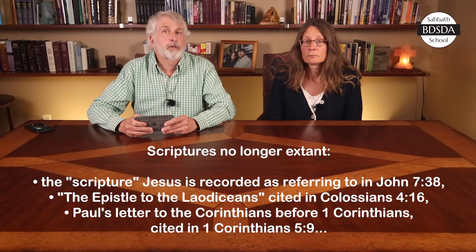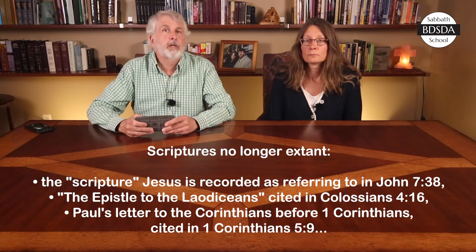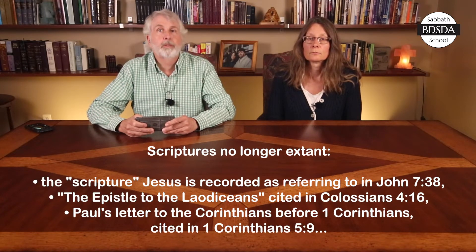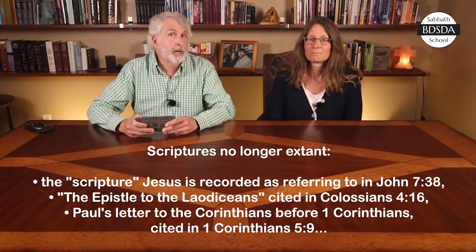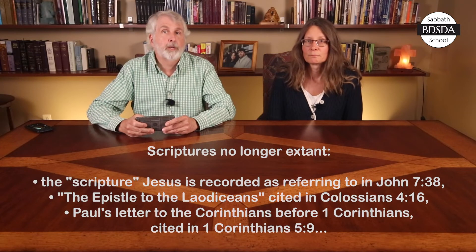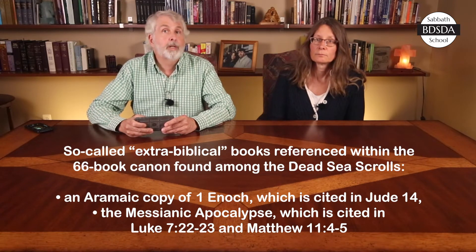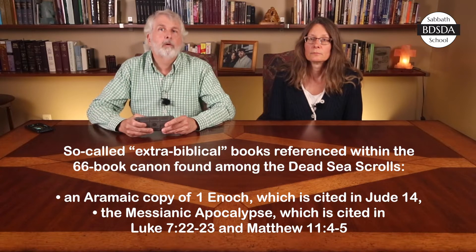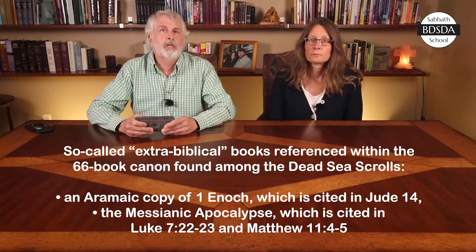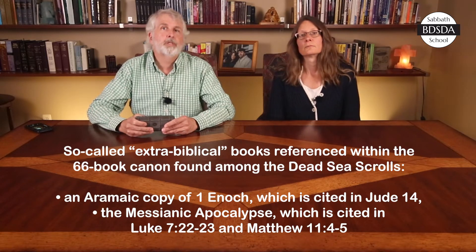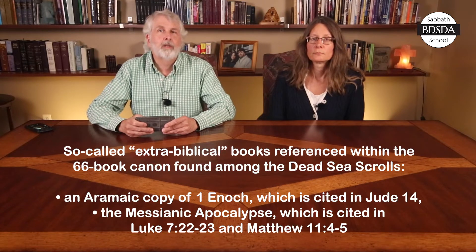Third, Jesus, Paul, and Jude all refer to writings outside of our modern Protestant Bible canons, some of which are no longer extant — like the scripture Jesus refers to in John 7:38, the epistle to the Laodiceans cited in Colossians 4:16, and Paul's letter to the Corinthians before 1 Corinthians, cited in 1 Corinthians 5:9, which if found would make 1 Corinthians become 2 Corinthians and 2 Corinthians become 3 Corinthians. But some so-called extra-biblical books referenced within the 66-book canon have been found among the Dead Sea Scrolls — in particular an Aramaic copy of 1 Enoch, cited in Jude 14, and the Messianic Apocalypse, cited in Luke 7:22-23 and Matthew 11:4-5.